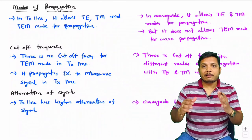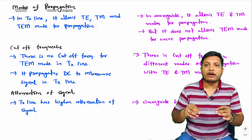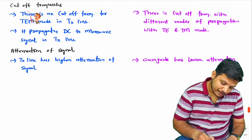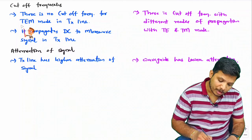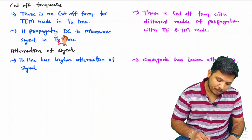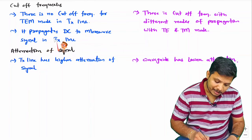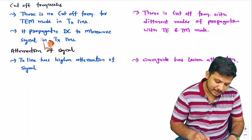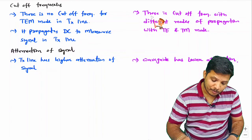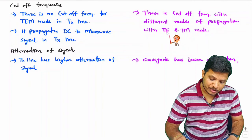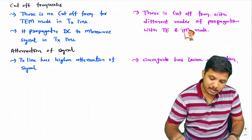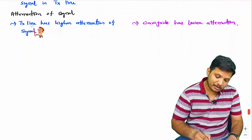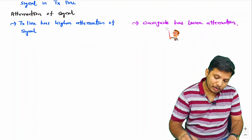In the next video, I'll explain why it is not possible to have TEM mode in waveguide. Regarding cutoff frequencies, transmission line has no cutoff frequency for TEM mode — it propagates DC to microwave signals. In waveguide, there is a cutoff frequency with different modes of propagation, and in examples I'll show how cutoff frequencies change with respect to different modes. Finally, attenuation is higher with transmission line and lower with waveguide.